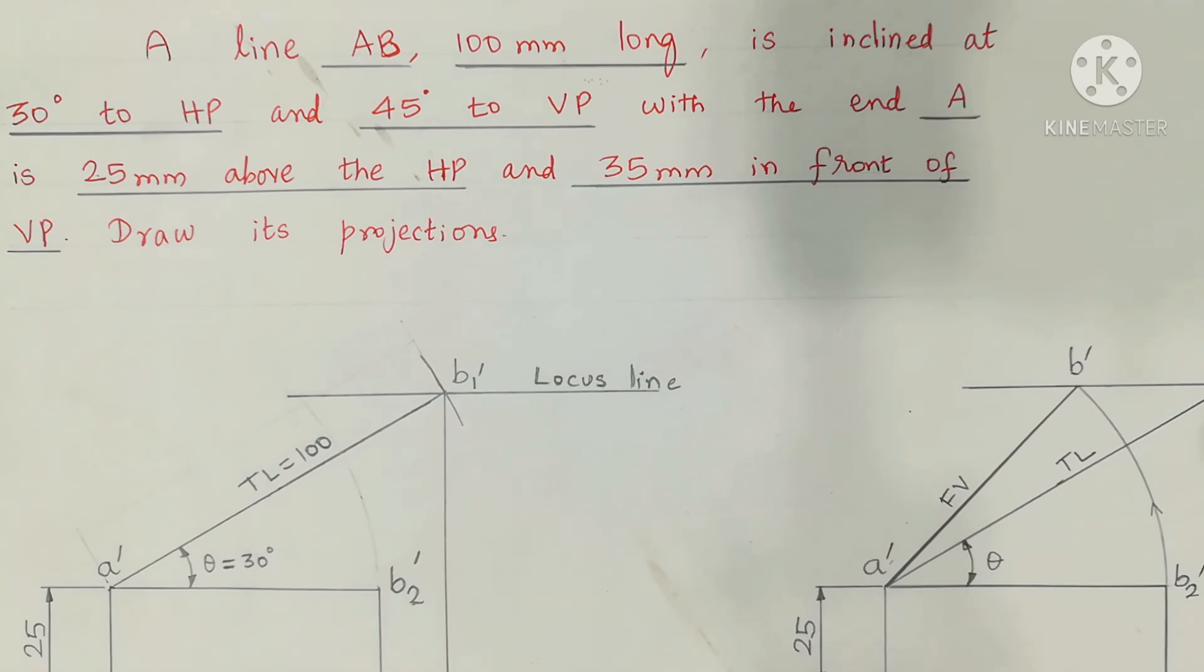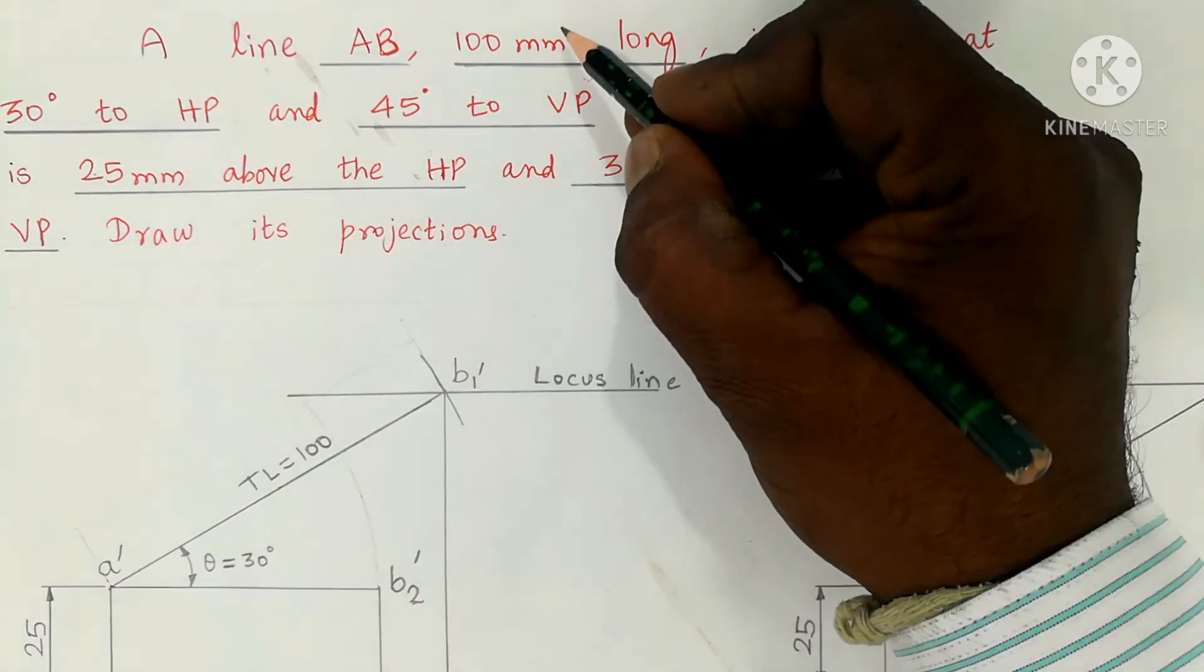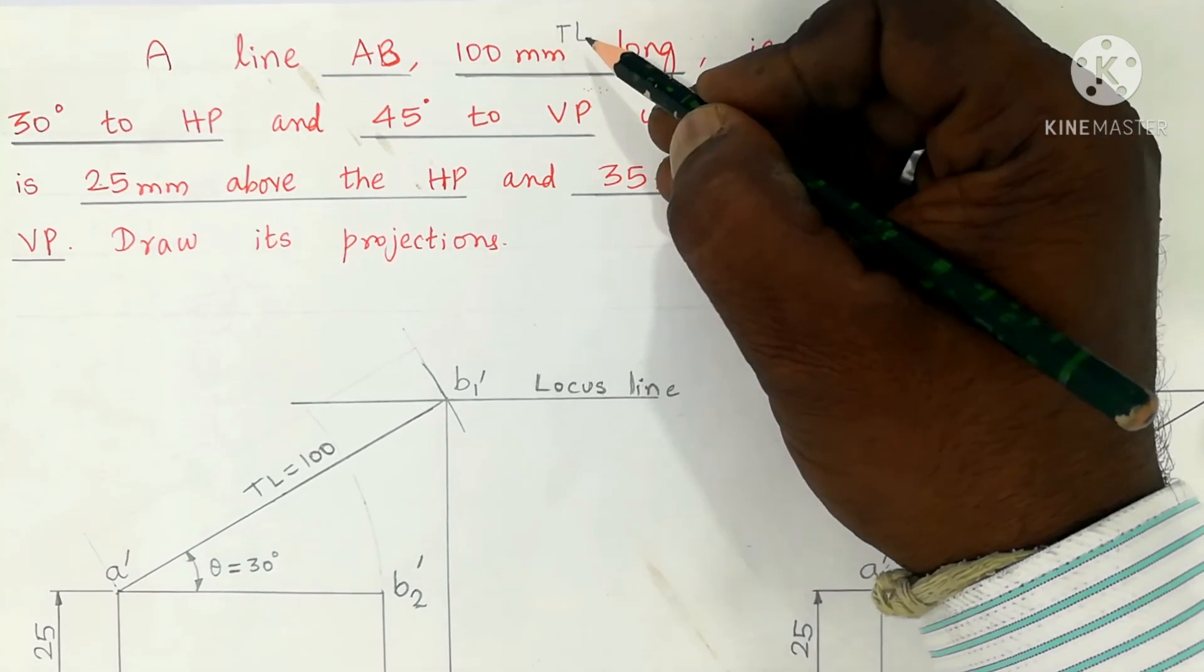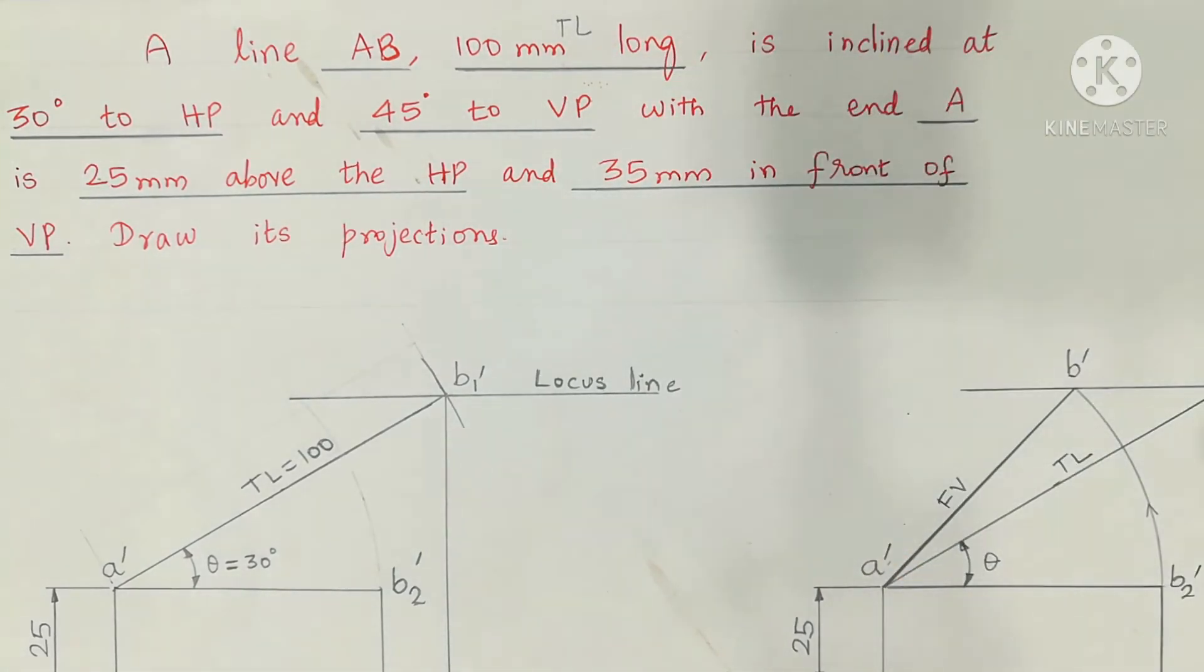AB is 100mm, so 100mm is called true length of the line, TL. TL means true length of the line. One end point is A, another end point is B. In the elaborate graph, the straight line is assumed of length 100mm, that is 10cm.